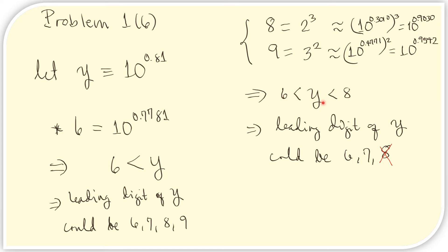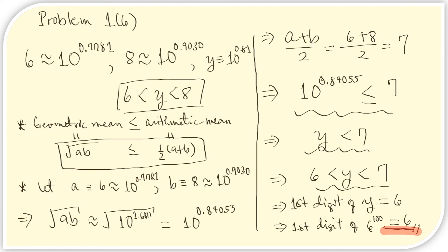Now that we have this inequality, we can be sure that the only possible leading digits for y are 7 or 6, not even 8 because it has to be less than 8.